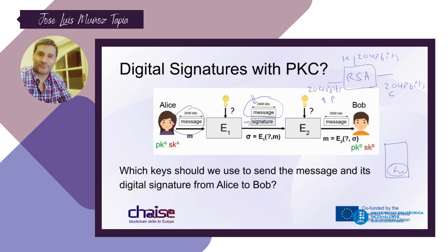Which key do I need to use for signing? Remember that for confidential messaging to Bob, I put Bob's public key in the first box. But here I want to generate a digital signature — something only Alice can produce. So what we put in the box is Alice's secret key. Alice uses her secret key to generate a signature that only Alice can produce. Then Bob receives both pieces of data — the message and the signature — and uses Alice's public key in the decryption box.